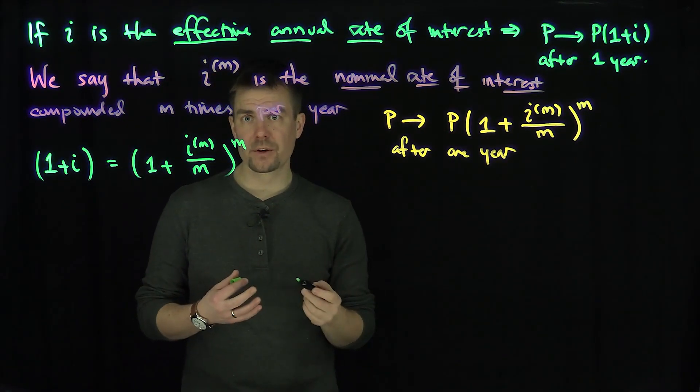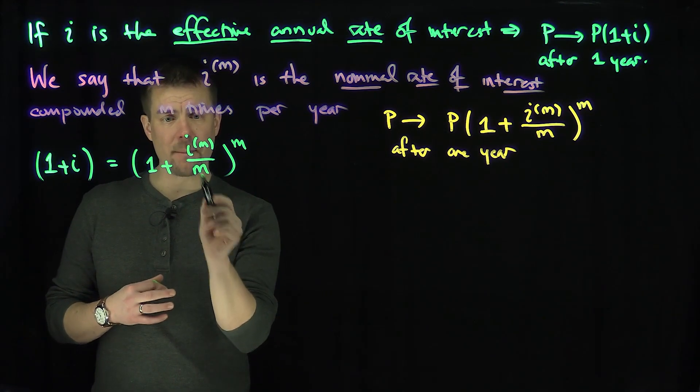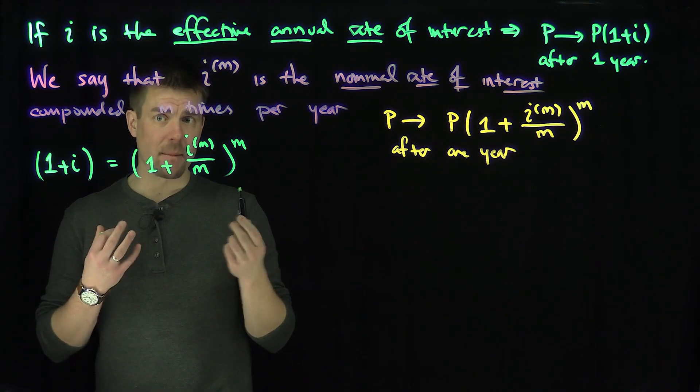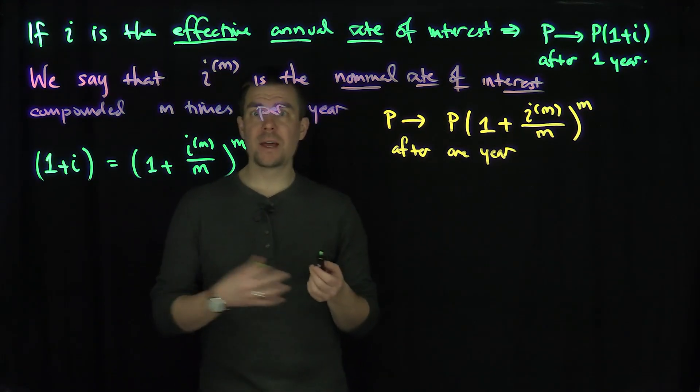So when they give you a nominal rate of interest in a problem, you always need to divide that nominal rate of interest, i_m, by the number of compounding periods m in the problem. Now, this gives us a relationship between i_m and i.